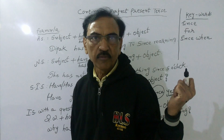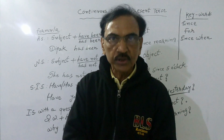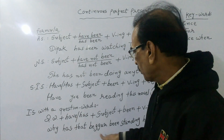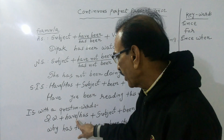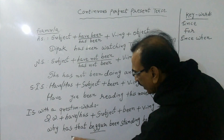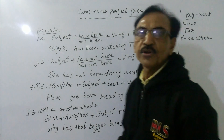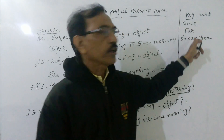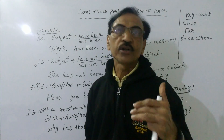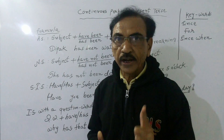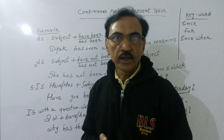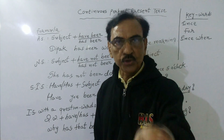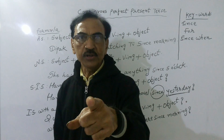The beggar is standing there since morning — he was there in the morning, at present he is there, and he may continue standing there. Since the beggar is third person singular, I have used: question word + has + subject + been + verb with -ing. 'Why has that beggar been standing here since morning?' So friends, continuous perfect present tense is very simple. Note down the keywords carefully. Don't forget to revise the tenses from our earlier videos: simple present, simple past, simple future, continuous present, continuous past, and continuous future tense. This is the 7th tense you are learning through this video.